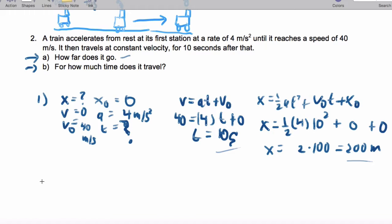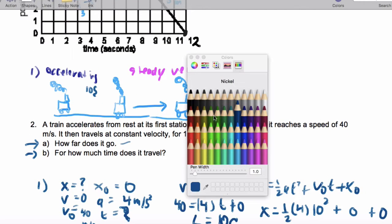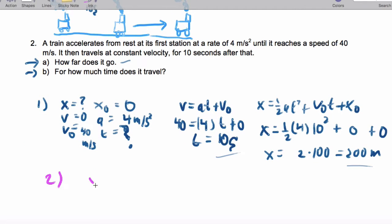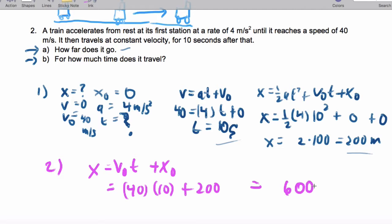Now how far do we go after that? So for the second part, we're traveling at steady velocity and I'm going to use my steady velocity formula. X is V naught T plus X naught. And that's going to be 40 times 10 plus X naught, which is this 200 here. So I cover a total of 600 meters.